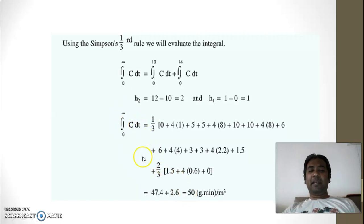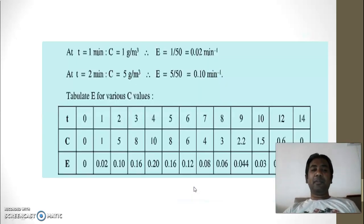So let us now assume that we have done this calculation and total effluent concentration we have got is 50. So for every concentration you will require to find every exit age distribution. So what is the formula? E is individual C divided by total concentration. So let us consider how we have calculated this.